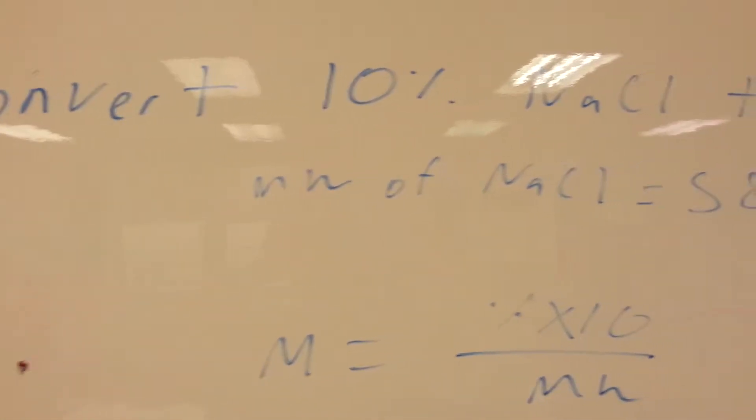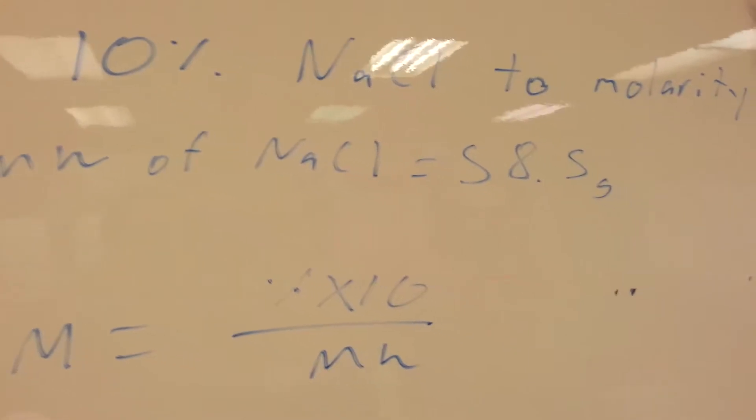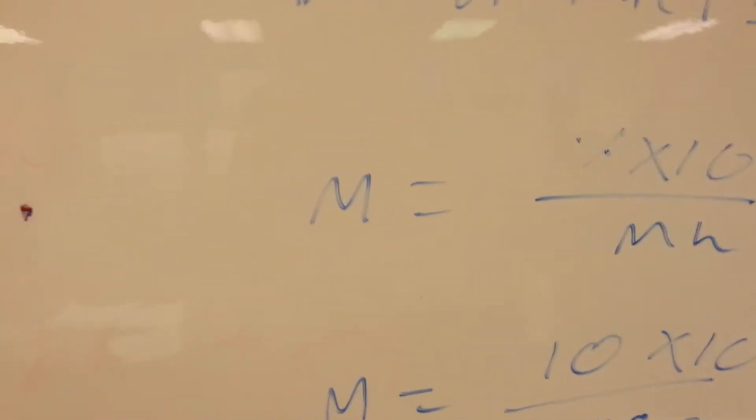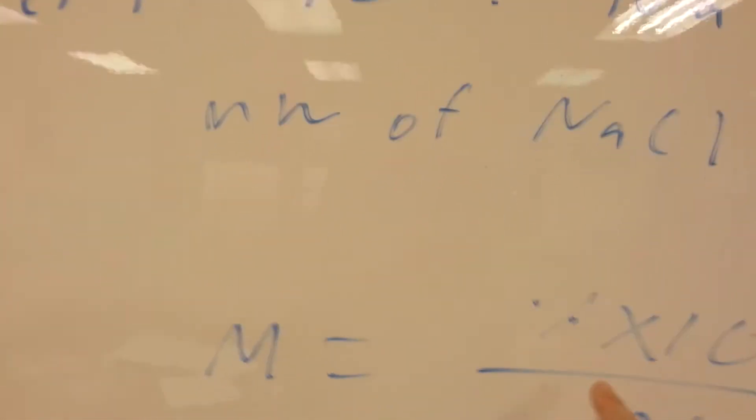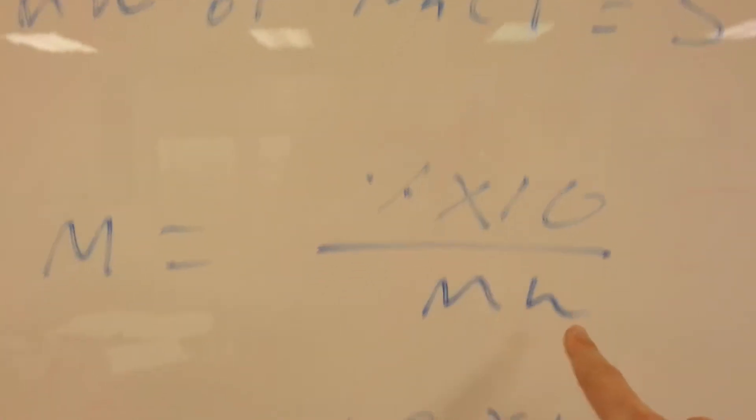First you want to do is find your molecular weight of sodium chloride, which is 58.5 grams. And here's your formula: molarity equals percent times 10 over molecular weight.